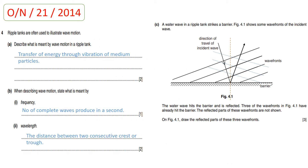The next question is from October-November paper 2.1, 2014. Ripple tanks are often used to illustrate wave motions and to demonstrate reflection and refraction in water waves. Part A asks: describe what is meant by wave motion in a ripple tank. Wave motion in a ripple tank is the transfer of energy through vibration of medium particles. When the oscillator strikes the water surface, the water particles vibrate and wave motion takes place, transferring energy from one end of the ripple tank to the other.